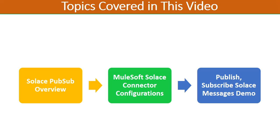First I will have a high-level overview of Solace PubSub+ and what exactly it is and why it is used. Then we will see how we can use the MuleSoft Solace connector which is available in Anypoint Exchange — how we can get it, do the configuration, and test the connectivity. Once we have set up the connection, we will see how we can do subscription as well as publication of messages to topics in Solace PubSub+. Note that in this video I will be covering the basics and not going into the nitty-gritties. You can always refer to official documentation on the Solace site, which covers what it is, why it is used, and how it differs from Apache Kafka.